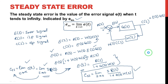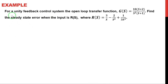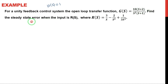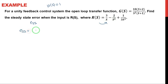Now we will move into Example 1. See here there is an example for a unity feedback control system. Unity feedback means the feedback signal H(s) is equal to unity, that is 1. The open-loop transfer function G(s) is directly given as 10(s+2) divided by s squared into (s+1). Find the steady-state error E_ss. The input signal R(s) is the given signal. The formula for E_ss is: limit S tends to 0 of S into R(s) divided by 1 plus G(s) into H(s).